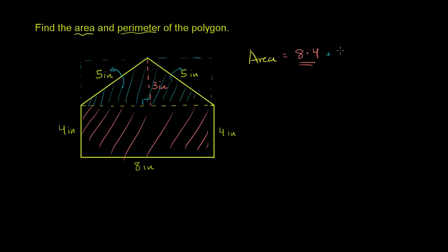So plus one half times the triangle's base, which is 8 inches, times the triangle's height. Oh sorry, it's not 8 times 4 — the triangle's height is 3, so it's 8 times 3.